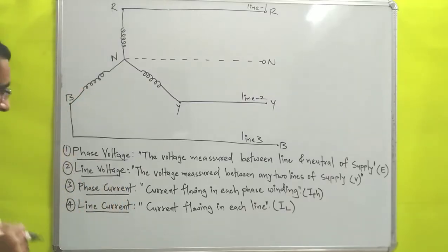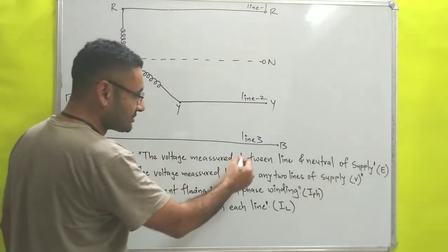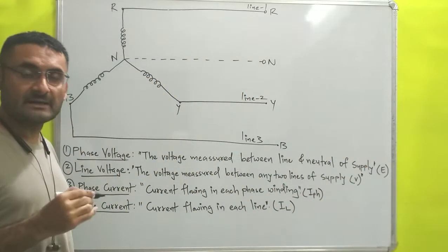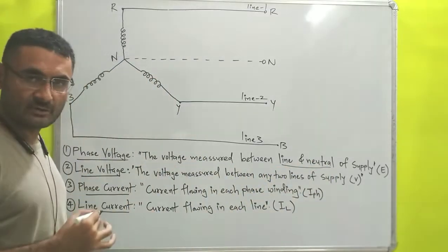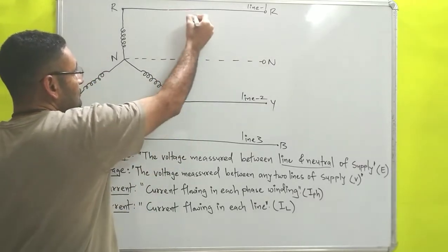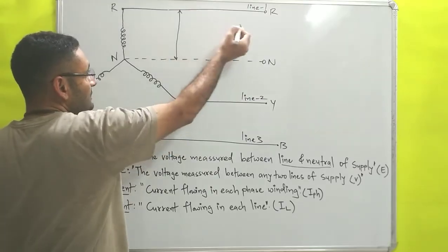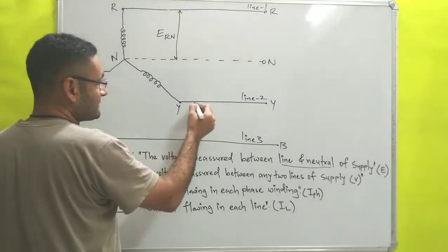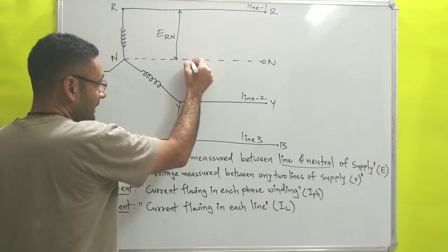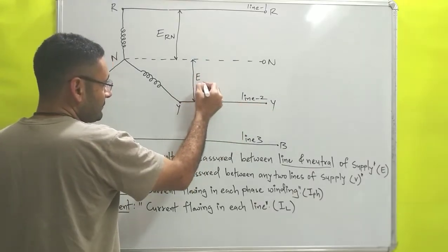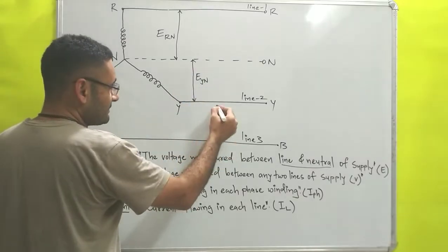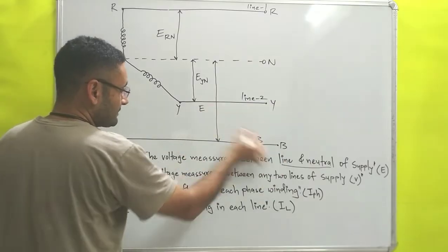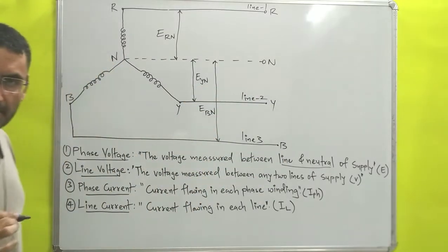First definition: phase voltage. Phase voltage is the voltage measured between a line and the neutral of supply, denoted by E. So phase voltage is measured between line and neutral. For R-line and neutral, it is written as E-R-N. For Y-line and neutral, it is E-Y-N. And for B-line and neutral, it is E-B-N. These notations should be remembered properly.